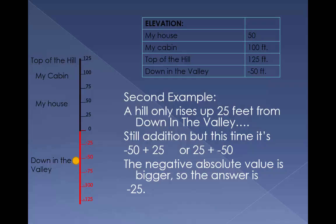Here's a second example. The hill only rises up 25 feet from down in the valley. It's still addition, but this time it's negative 50 plus 25, or 25 plus negative 50. And we're still going to subtract to solve it, because they're different signs.